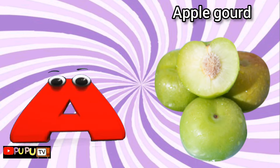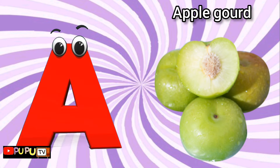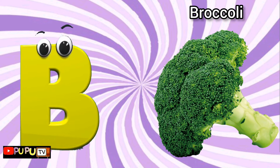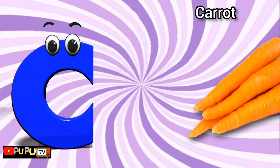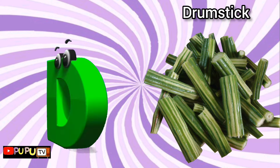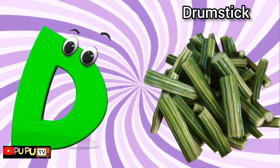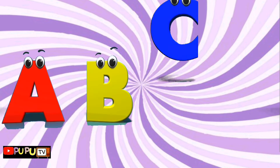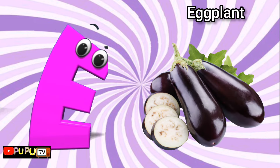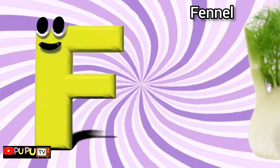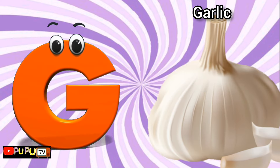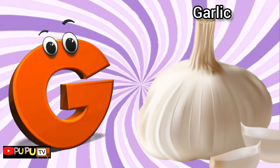A is for apple gourd. B is for broccoli. C is for carrot. D is for drumstick. E is for eggplant. F is for fennel. G is for garlic.